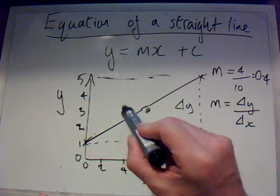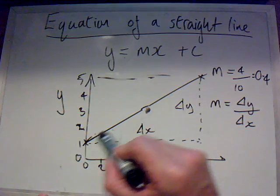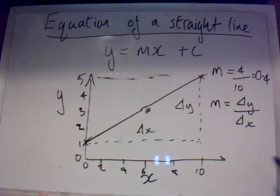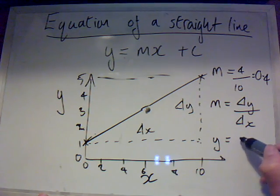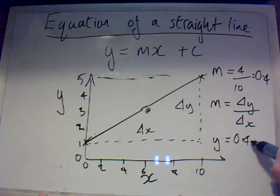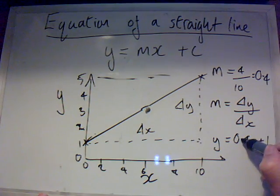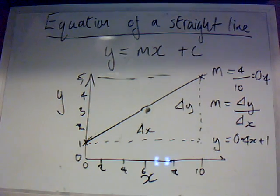And c, well c is where it's going to cross the y-axis, and it crosses the y-axis at 1. So the full version would be y is equal to 0.4x plus 1. Now that should be familiar to you from mathematics. You may have forgotten it.